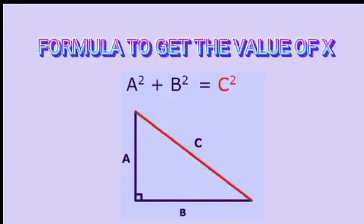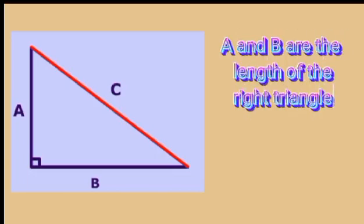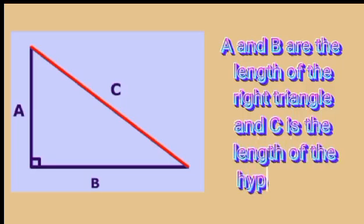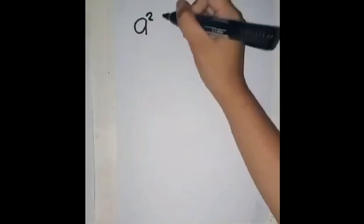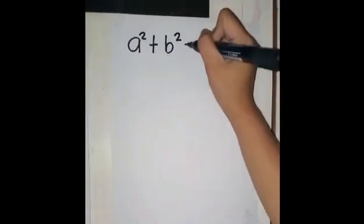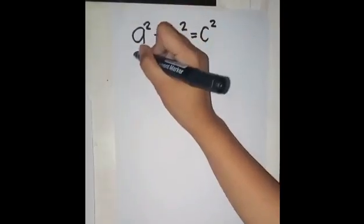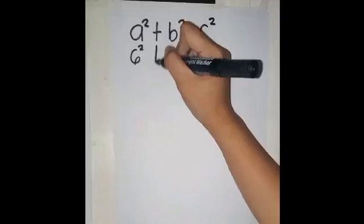The formula to get the value of x is a squared plus b squared equals c squared, where a and b are the lengths of the legs of the right triangle and c is the length of the hypotenuse. So here, since the lengths of the legs are 6 and 8 and the hypotenuse is x, we can set up the equation 6 squared plus 8 squared equals x squared.